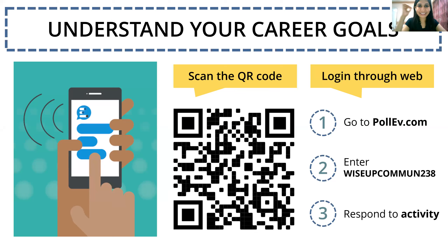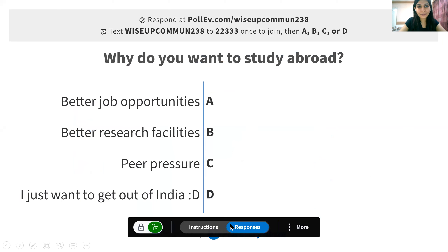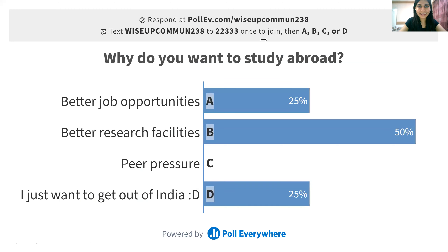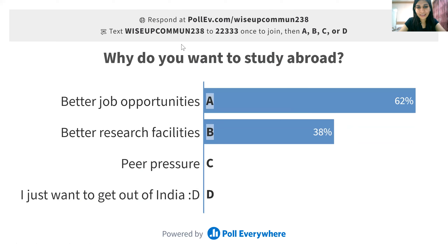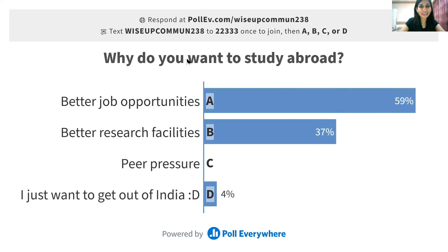The first question is: why do you want to study abroad? Looking at the results — 63% say better job opportunities, 36% say better research facilities, and about 4% say they just want to get out of India. Nobody is going through peer pressure, which is good, though sometimes our decisions are influenced by peer pressure without us even realizing it.